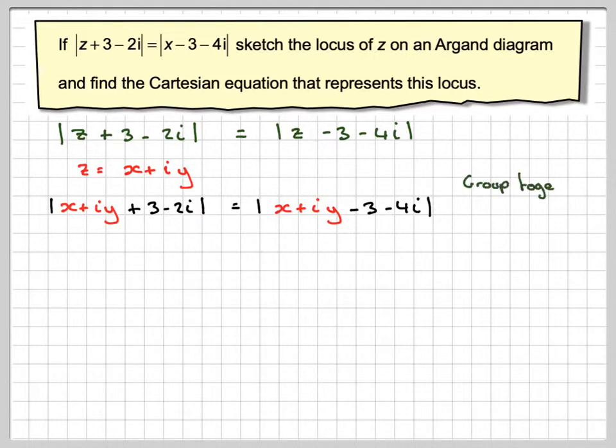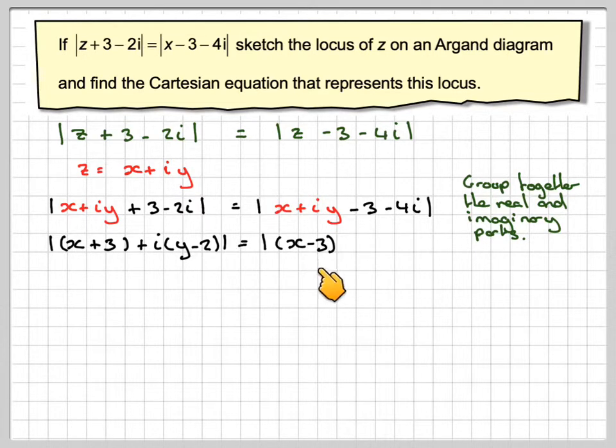Now the next thing to do is to collect or group together the real and the imaginary parts. So the real bit here is x plus 3, still got the modulus sign, and the imaginary part is y minus 2. Put the i out in front there. Here on this one we've got x minus 3, and here we've got i times y minus 4.